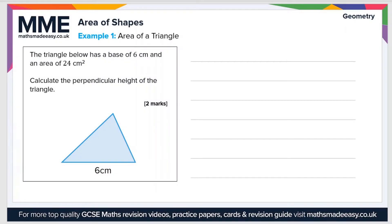So if we take a look at an example now: the triangle below has a base of 6 centimeters and an area of 24 centimeters squared. Calculate the perpendicular height of the triangle—the perpendicular height is this here, which we'll call h.